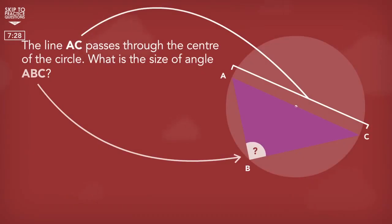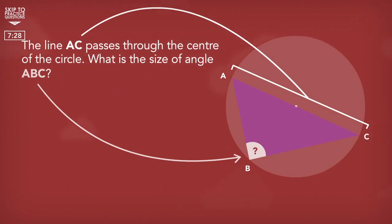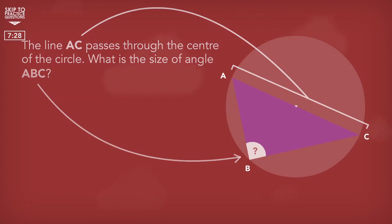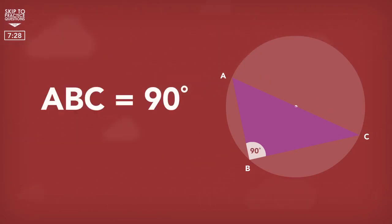One possible question we could have is: what is the size of angle ABC? If the diameter links to a point on the circumference, the angle is always 90 degrees.